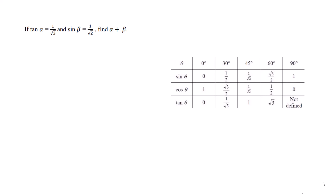Let's discuss one more question from the latest sample paper. Take the first question: if tan α = 1/√3 and sin β = 1/√2, find α + β. So tan α is equal to 1/√3 and we have to find out the value of α.